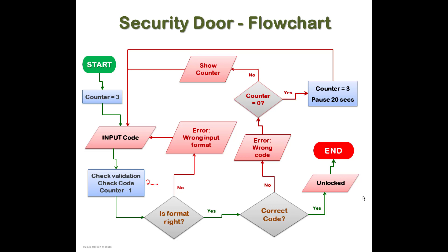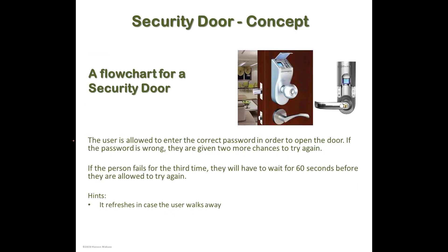Hello and welcome. This is a flowchart for a security door. What it does is allow the user to enter the correct password. You are given three chances to do that, and if the password is still wrong, the door will — you can set it to make an alarm, show an error message, wait a minute, or any reaction following incorrect input of the code.